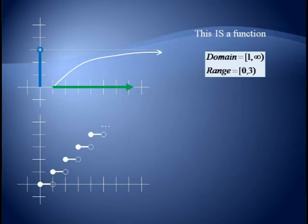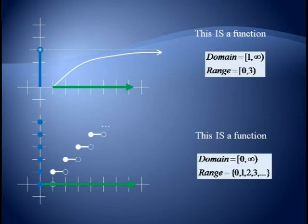In the second case, we again have a function since a vertical line will only hit a single point. If we smash this down to the x-axis, we get all reals greater than or equal to 0. Again, the range is a bit tricky. If we smash this against the y-axis, we only hit the axis at integer values, so the range is the whole numbers, 0, 1, 2, 3, and so on.